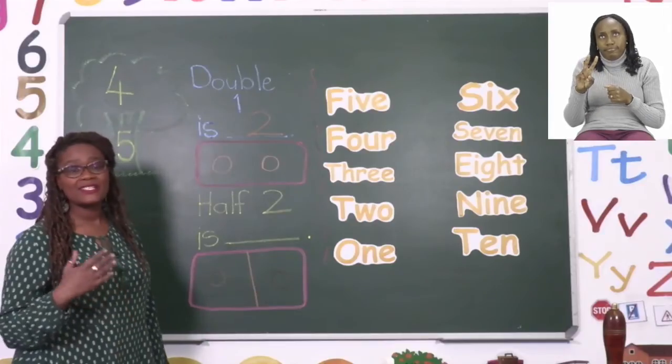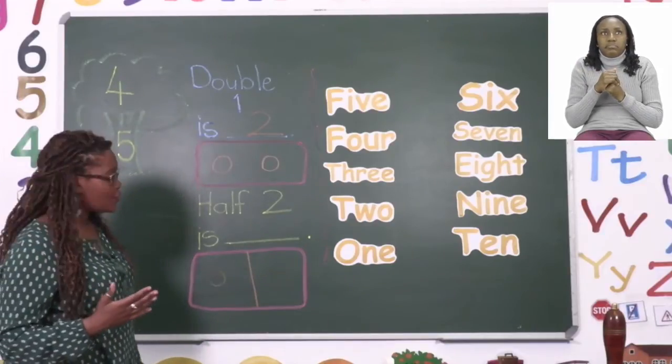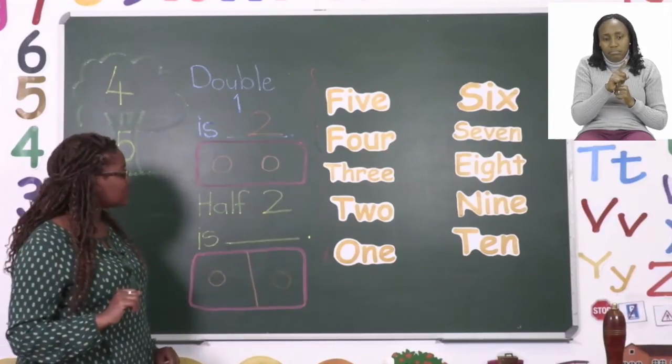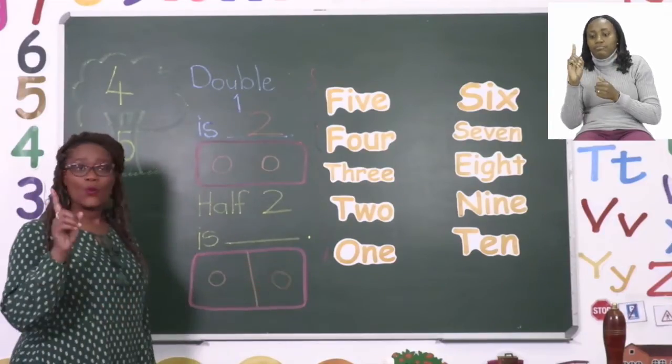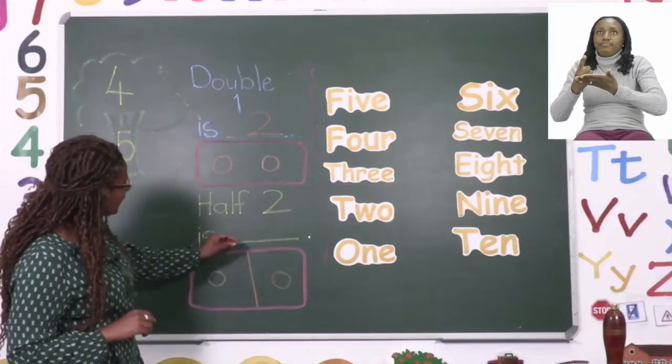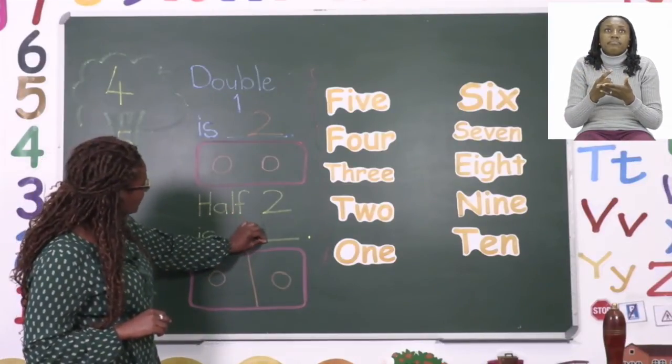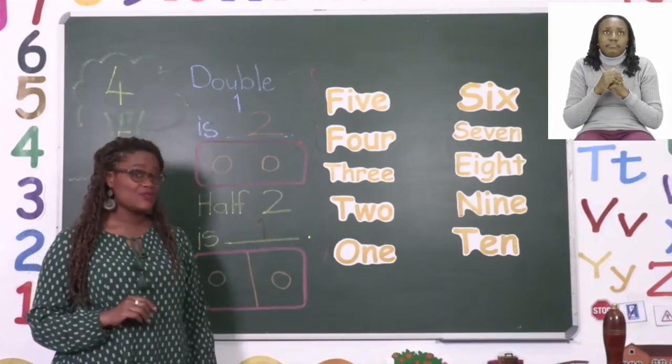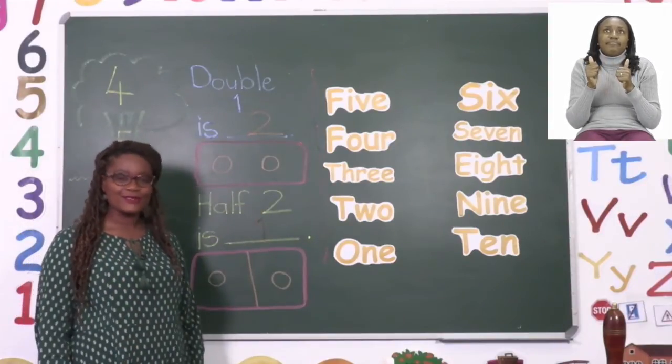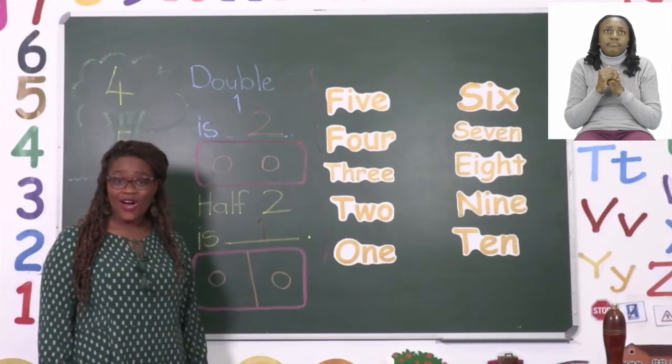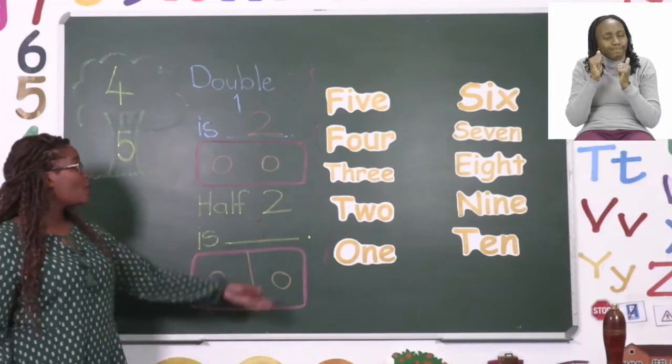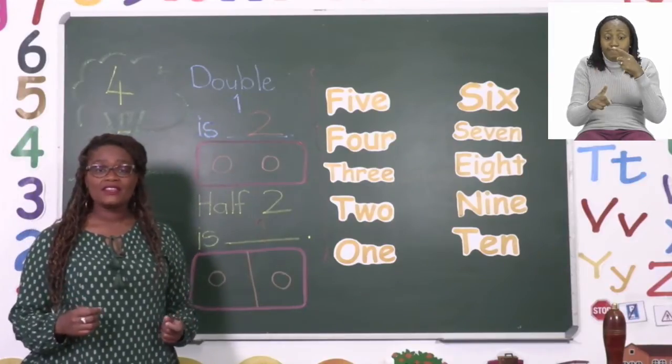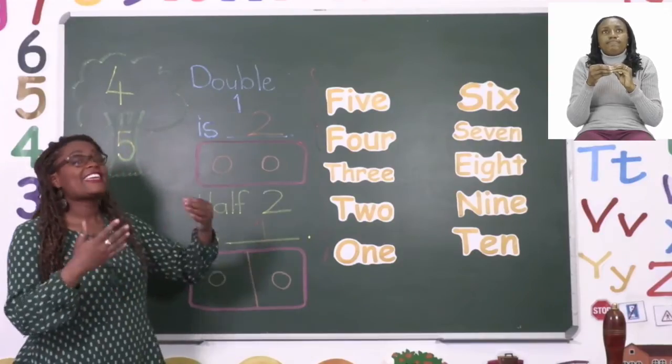So our two is there and we have drawn one, two. Now we need to find out what is on each side. So the first side has only one and then the second side only has one. So that means boys and girls that half of two is one. Good job if you knew the answer before I told you. So take your time with the doubling and the halving boys and girls. Remember when we are doubling we are going to make whatever number we are given times two or we do it again.